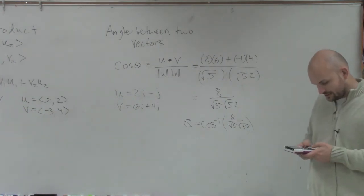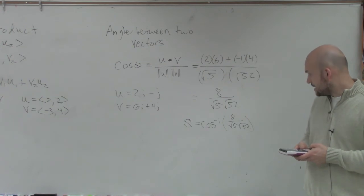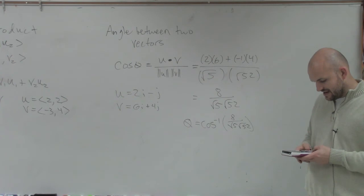So all I'd simply do is just take the square root of 5 and multiply it by the square root of 52. And I take 8 and divide it by that answer.